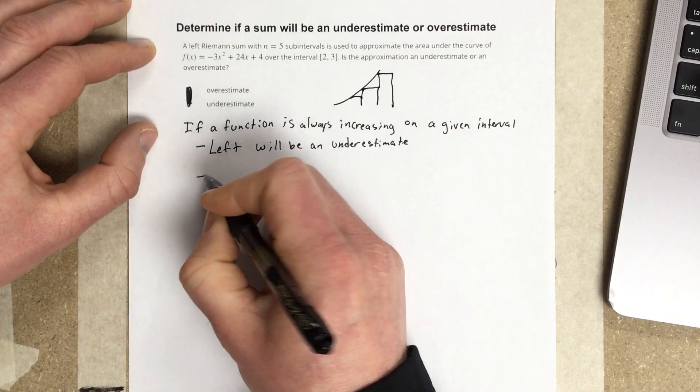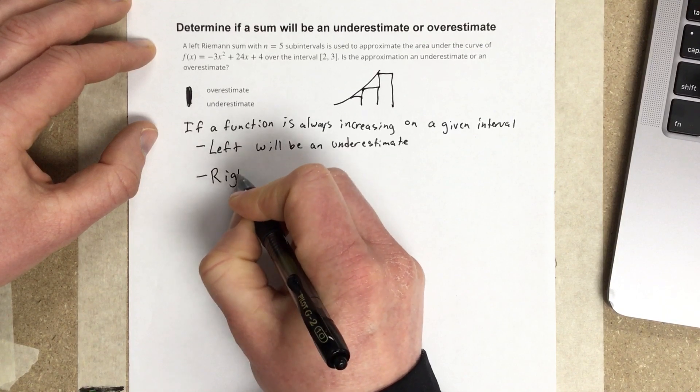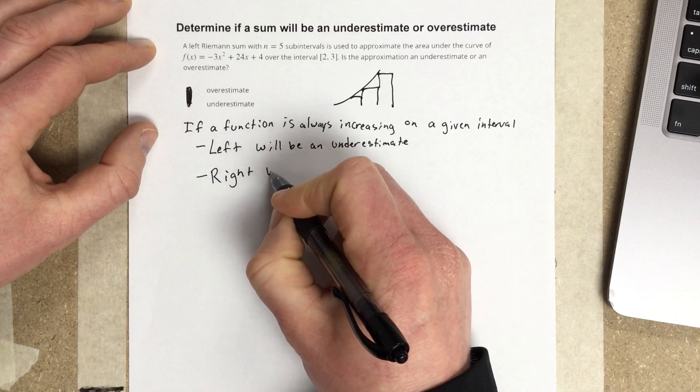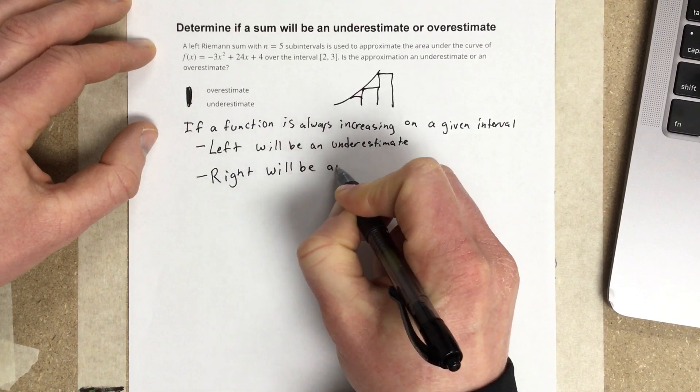Now, if we have a right, the exact opposite is going to occur. We're actually going to have an overestimate.